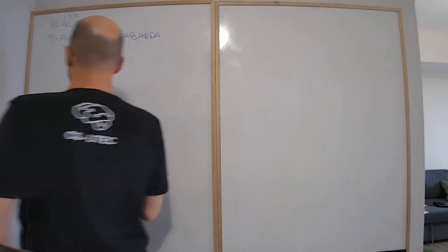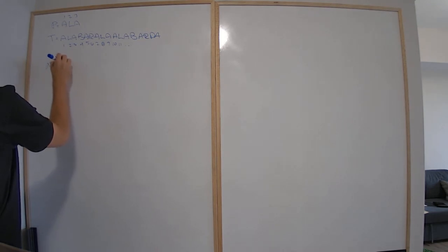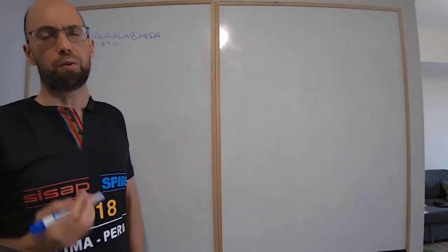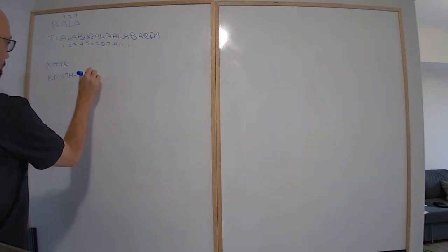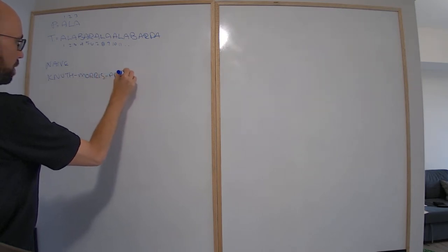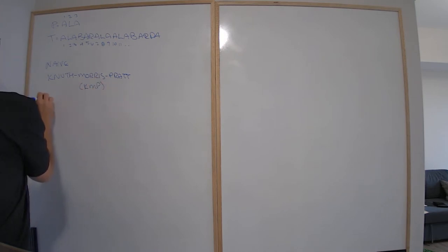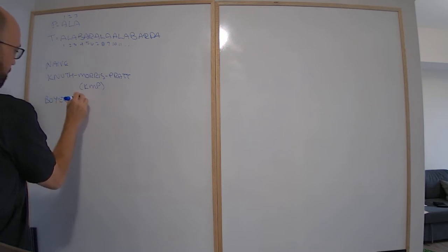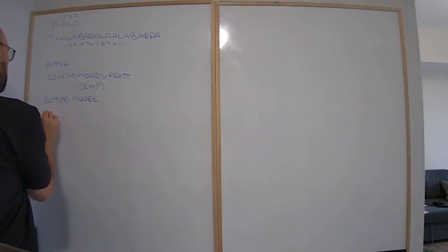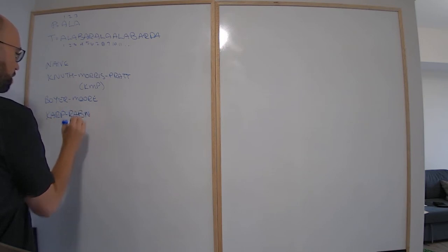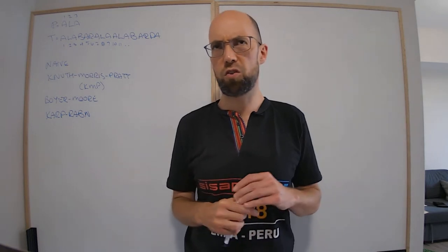So how would you do this? We're going to see there are a load of ways — this is a really well-developed field. We're going to look at a few algorithms: first the naive algorithm, which is what you'd do as a first or second year. Then we'll see Knuth-Morris-Pratt, usually known as KMP. Then Boyer-Moore. And then Karp-Rabin, which we'll spend more time on because it's a bit magic, and if you generalize it, you can do things that seem impossible.